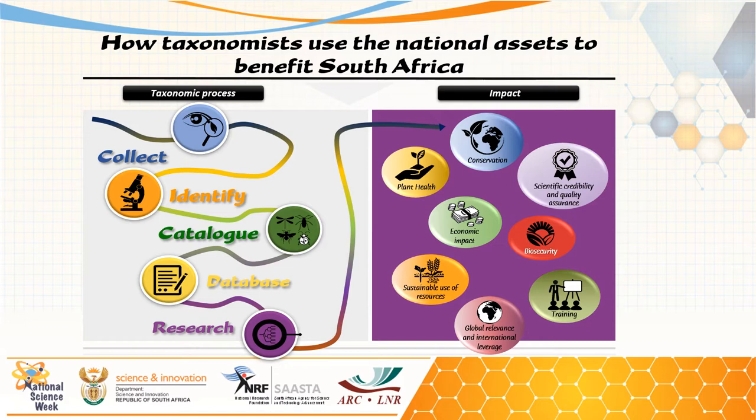The research is shared through a peer-reviewed paper or conference contribution to other scientists, while popular articles and infographics help to share this information with society. The research being done has an impact on conservation, plant health, economic importance, biosecurity, training, global relevance, international leverage, and the sustainable use of research resources.